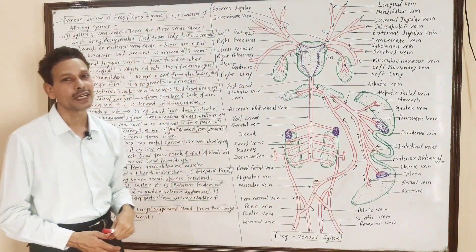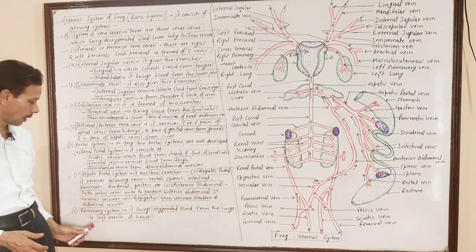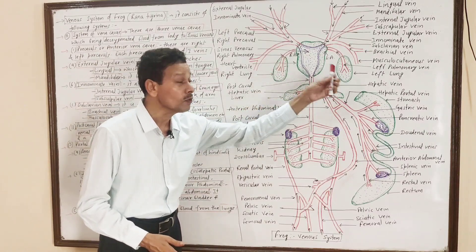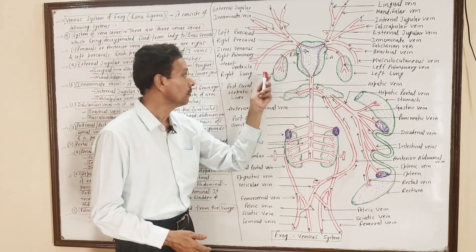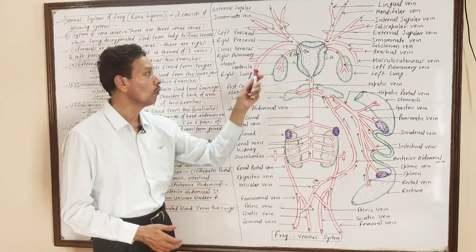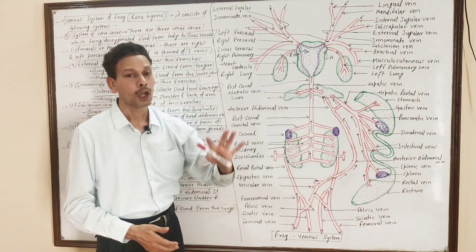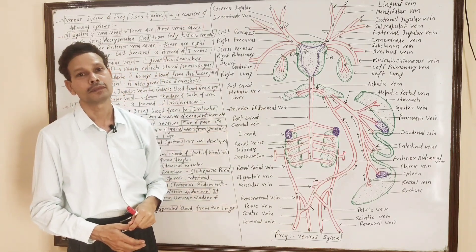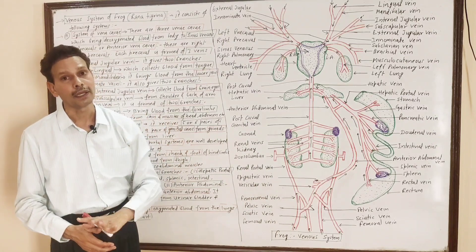The third component of this venous system is the pulmonary system. In this system, oxygenated blood from the lungs is collected by the right and left pulmonary veins. Both right and left pulmonary veins bring oxygenated blood into the left atrium. This is all about the venous system of frog, Rana Tigrina.